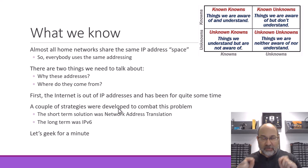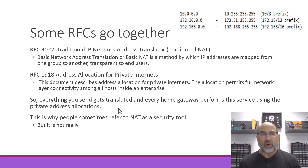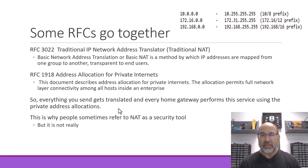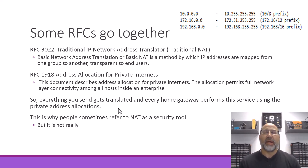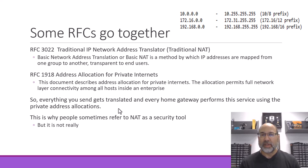So let's geek for just a minute here. There are a couple of RFCs that go together: RFC 3022, the Traditional IP Network Address Translator. This is just one line from the RFC: The Basic Network Address Translation, or Basic NAT, is a method by which IP addresses are mapped from one group to another, transparent to end users.